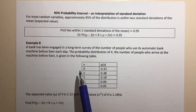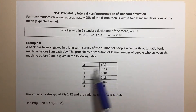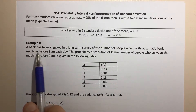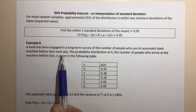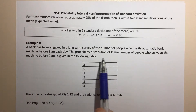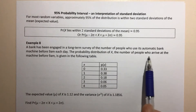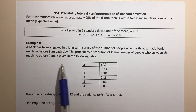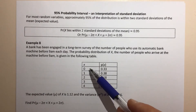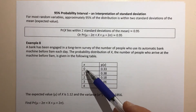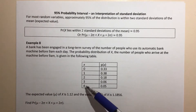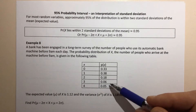Let's look at an example using a discrete probability distribution table. A bank has been engaged in a long-term survey of the number of people who use its automatic bank machine before 9 a.m. each day. The probability distribution of X, the number of people who arrive at the machine before 9 a.m., is given in the following table. X can take values of 0, 1, 2, 3, or 4, and here are the associated probabilities.